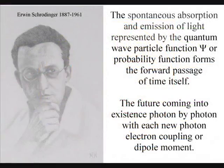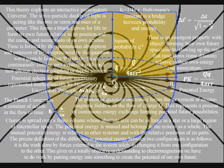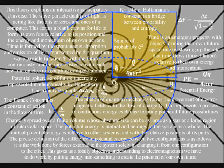Time is formed by the spontaneous absorption and emission of light represented by the quantum wave-particle function, or probability function, with the future continuously coming into existence with each new photon-electron coupling, or dipole moment.